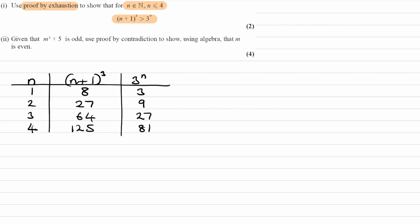And what we see here is for each individual n value, n plus 1 cubed is always bigger than 3 to the power of n. So basically, all of these numbers are bigger than these numbers for the respective n value. Therefore, for n is a natural number where it's less than or equal to 4, this statement must be true.